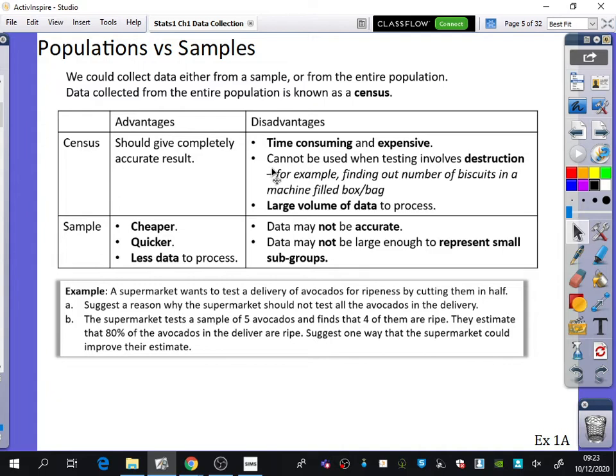You cannot do a census when testing involves destruction. For example, if you wanted to find out how many biscuits a machine fills into a bag in a factory, you'd have to open every packet. You can't do a census in that factory because all the biscuits would be opened and go stale. You can't do a census if it destroys everything.